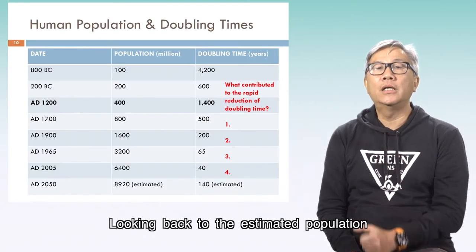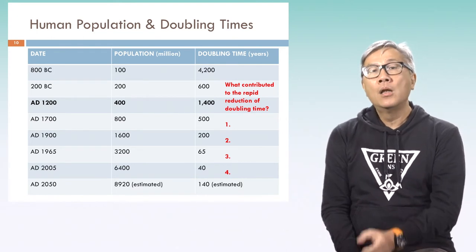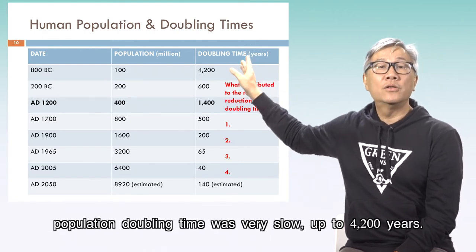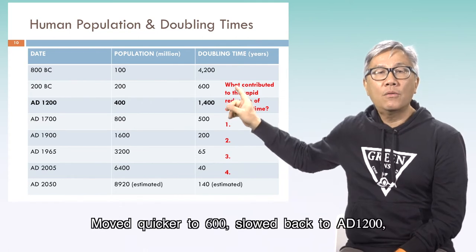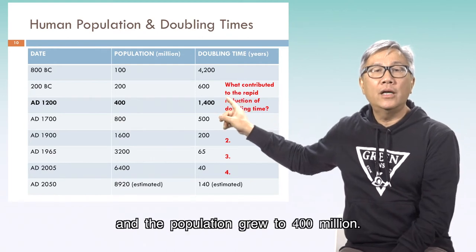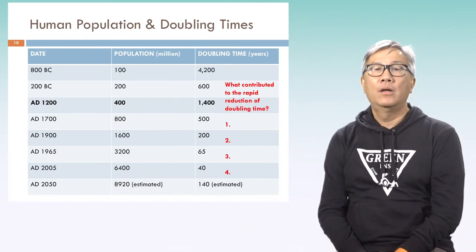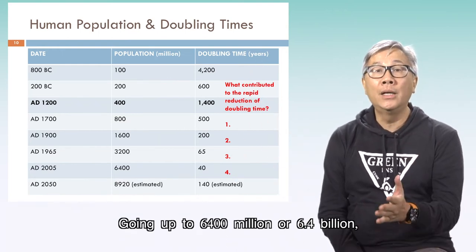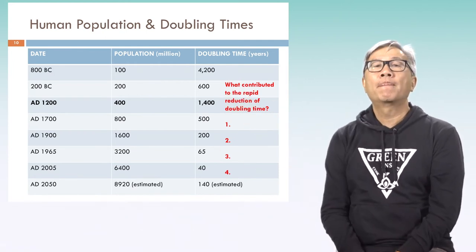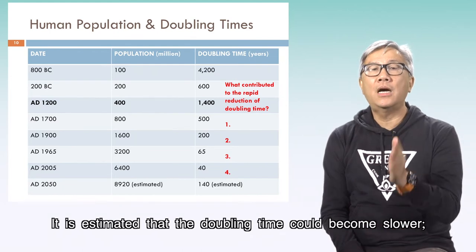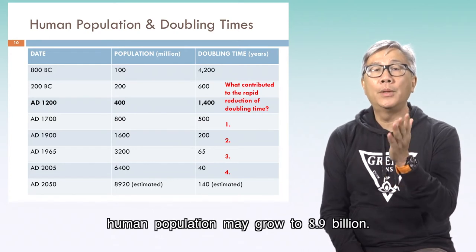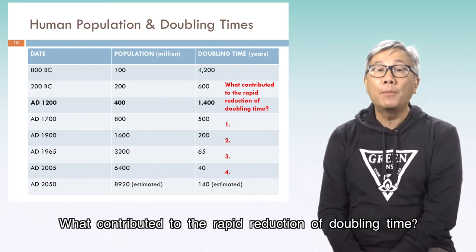Looking back, the estimated population of 100 million in 800 BC had a very slow doubling time of up to 4,200 years. Moving to AD 600, slower back to AD 1200, the population grew to 400 million. Going up to 6.4 billion, the doubling time drops rapidly. It is estimated the doubling time could become slower, with human population possibly growing to 8.9 billion. What contributes to the rapid reduction of doubling time?